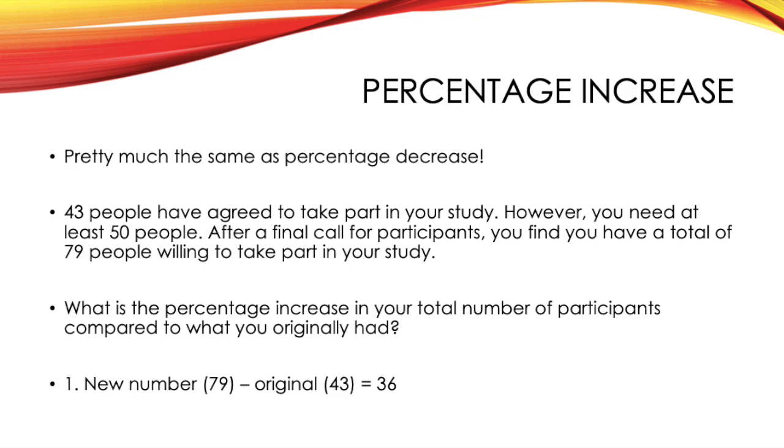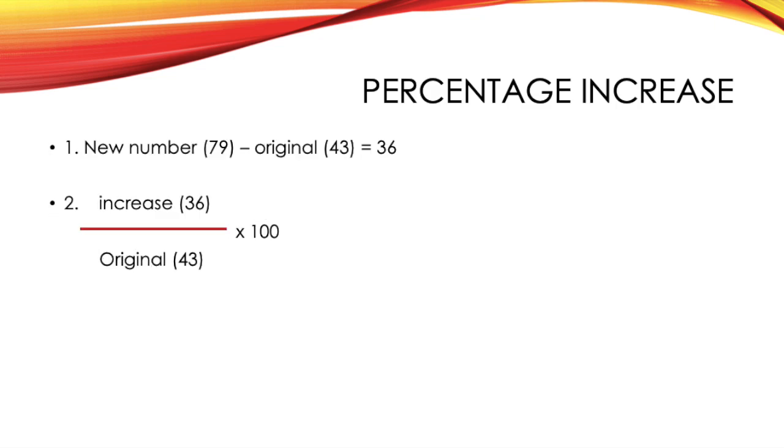So, the first thing you need to do is calculate your increase. And to do this, you take your new number, which is 79, and take away the original, which was 43. And this leaves you with 36. So, this step is somewhat different from decrease, as in decrease, it was the other way round. What you then need to do is divide your increase, which was 36, by your original number, which was 43. And then you times this by 100 to make it into a percentage. And when you put this into your calculator, you should find that you get an 83.72% increase in your number of participants.